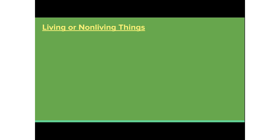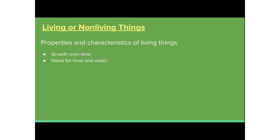An important concept for children to learn in this strand is to distinguish between living and non-living things. Some properties and characteristics that distinguish living things include growth over time, the need for food and water, and the ability to heal and regrow when damaged or hurt.